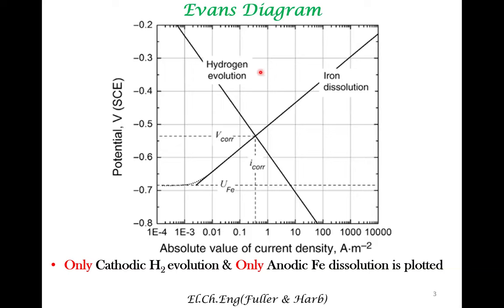The equilibrium electrochemical potential for the hydrogen evolution reaction is not shown here. But as you can see, as you go in the cathodic direction, the hydrogen evolution rate increases. In the previous plots corresponding to these two different reactions, we presented the overall current. Here, only part of the current is being presented — only the cathodic part of hydrogen evolution and the anodic part of iron dissolution is being shown.